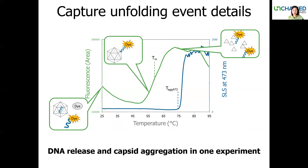UNCO can combine fluorescence data to detect genome ejection times and SLS data showing aggregation occurrence in parallel. In this example experiment, genome ejection, shown as Tm in the graph, occurred early starting at around 58°C, yet aggregation — shown as Tagg in the blue line — occurred at a later time point around 75°C. This shows that only UNCO, with its combination of detection techniques and thermal ramping capabilities, can give you the full picture on capsid stability: when DNA gets released and when the capsid aggregates.